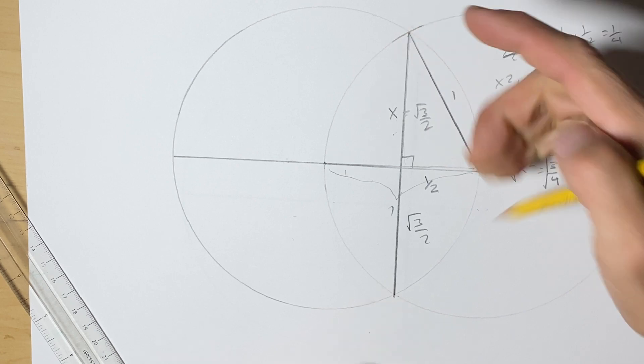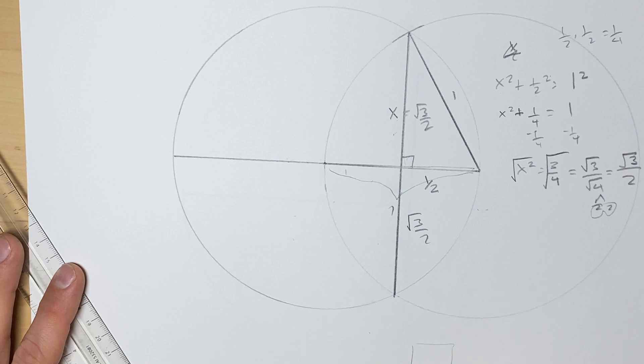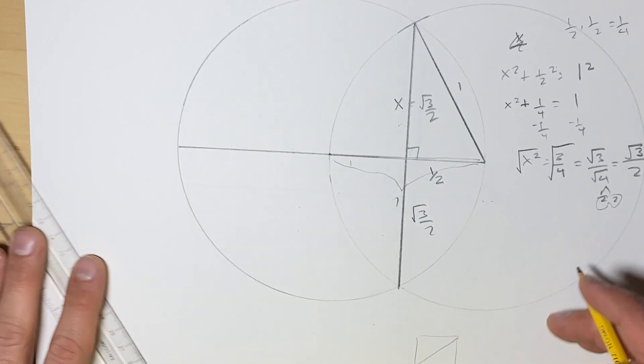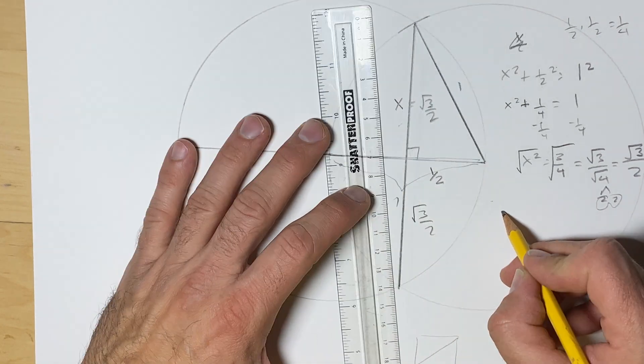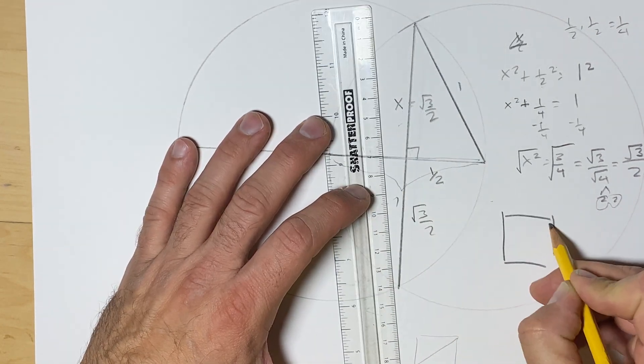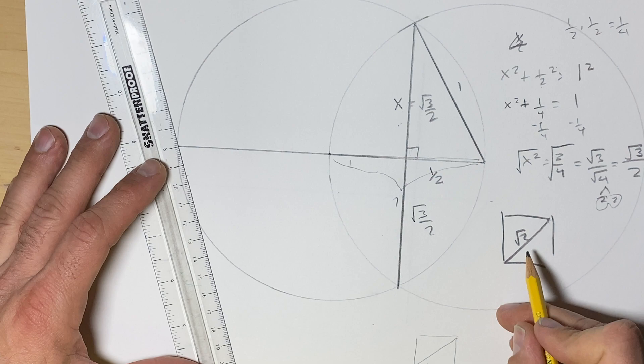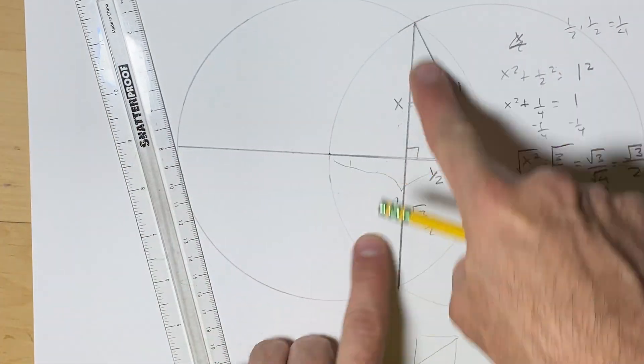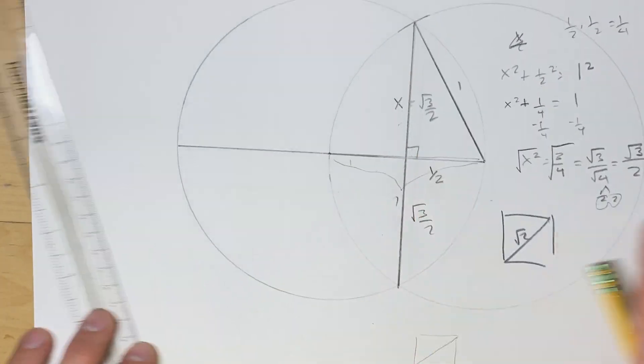When you get a square and get the diagonal of the square you would actually get √2. That's the way we would get that irrational number. Drawing two circles like this would give us √3.